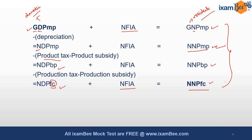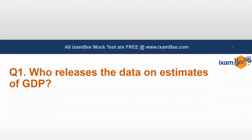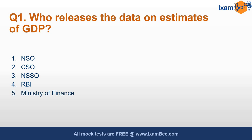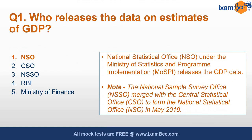Now let's discuss some questions related to these aggregates. Who releases the data on estimates of GDP — NSO, CSO, NSSO, RBI, or Ministry of Finance? The correct answer is NSO — the National Statistical Office under the Ministry of Statistics and Programme Implementation. Earlier, CSO used to release this data, but the National Sample Survey Office merged with CSO to form the National Statistical Office in May 2019, and since then we call it NSO.